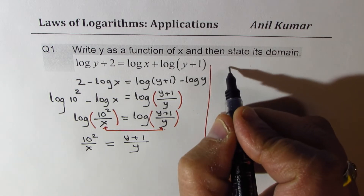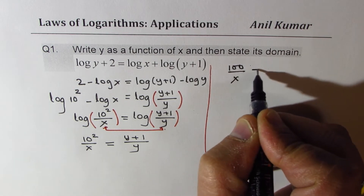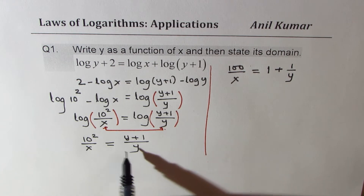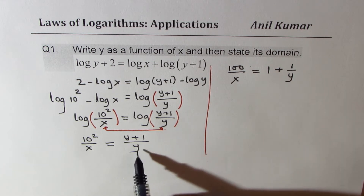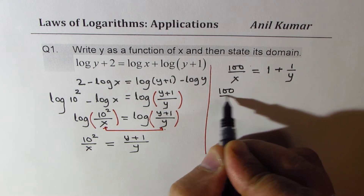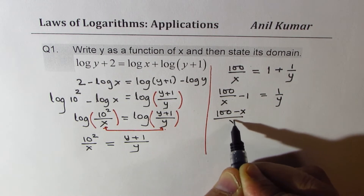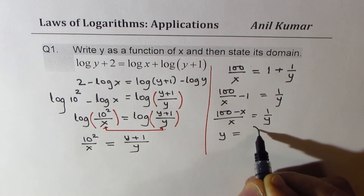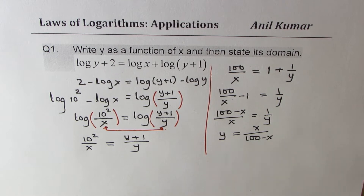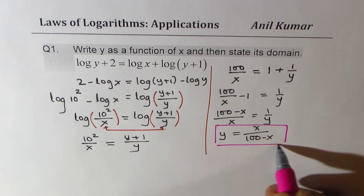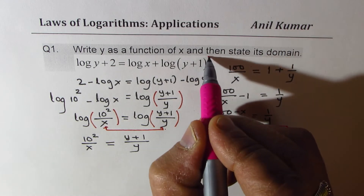From 100/x = (y+1)/y, we rewrite the right side as 1 + 1/y. So 100/x − 1 = 1/y, which gives (100−x)/x = 1/y. Therefore y = x/(100−x). That is how we write y as a function of x.